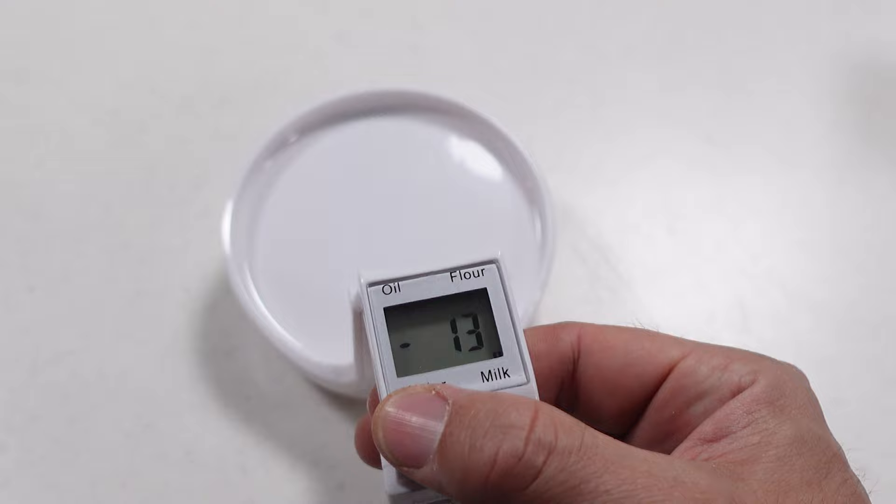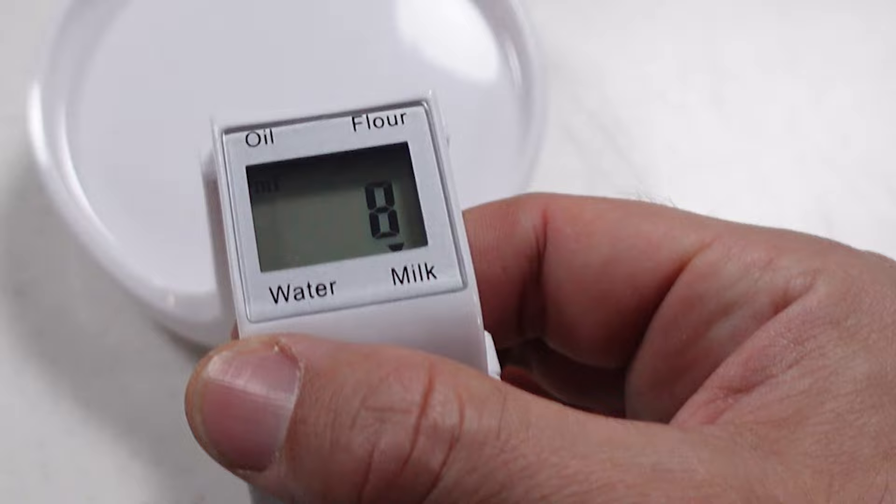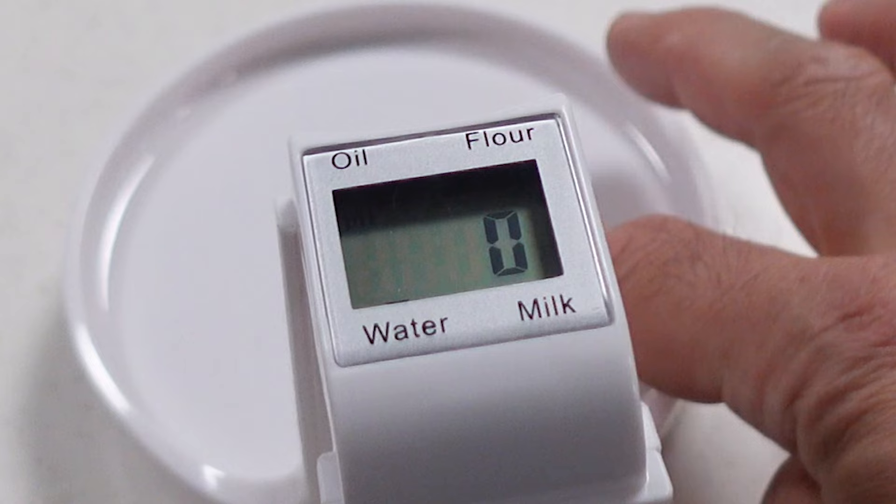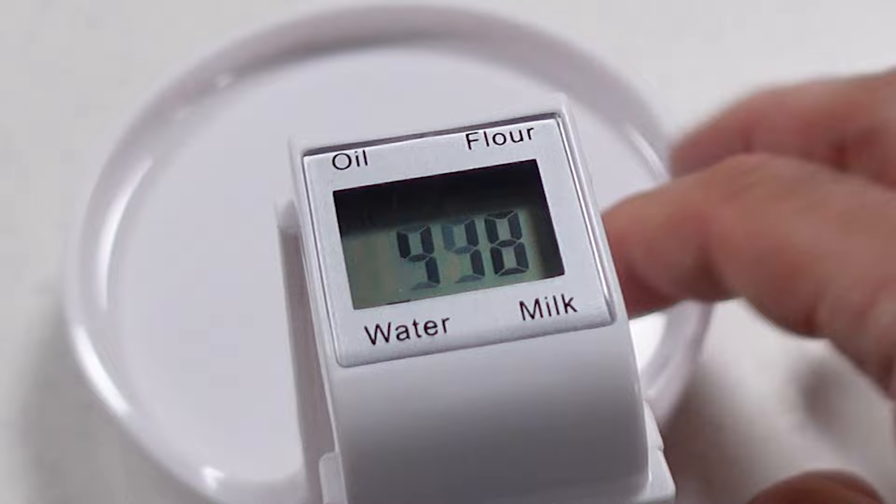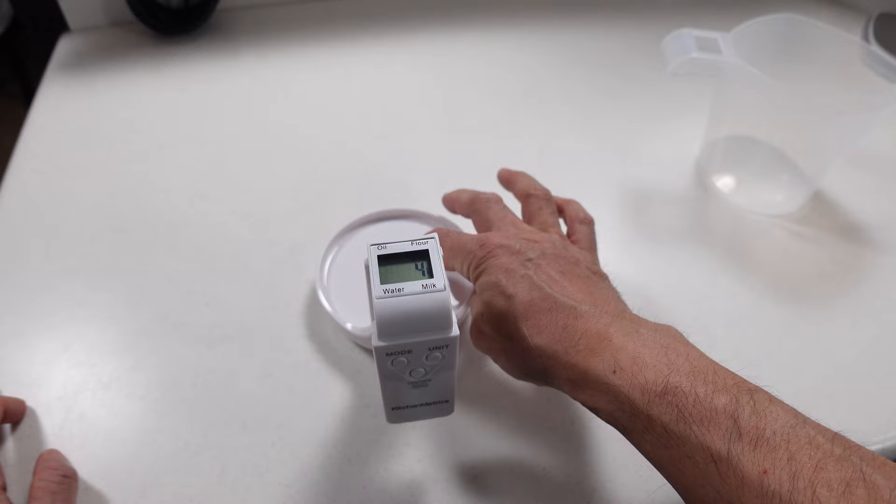You've got your mode button here that says we're measuring water, that says we're measuring milk, that says we're measuring oil and that is the measurement for flour. The flour measures in cups and looks like it only measures in cups. The water measures in milliliters and cups as well. The oil looks like the same deal. If I click the mode button one more time it'll go back to the regular scale mode.